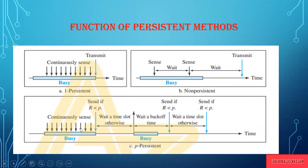In P-persistent, the channel continuously senses and divides time into different slots. It waits for one slot and checks a probability value. A random number is generated: if the random number is less than or equal to the probability, the station transmits the frame. If it is greater than the probability, it waits for another slot. Since the probability comparison differs across stations, P-persistent performs better than both one-persistent and non-persistent.